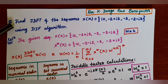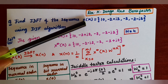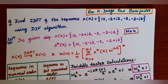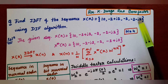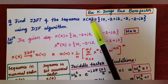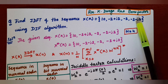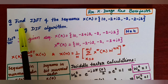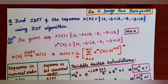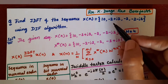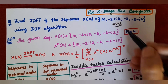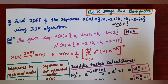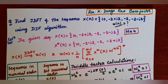The given question is: find IDFT of the sequence capital X(k) = {10, -2+j2, -2, -2-j2}. This is the given X(k). What you have to find? You have to find small x(n), which is the IDFT of the given capital X(k).